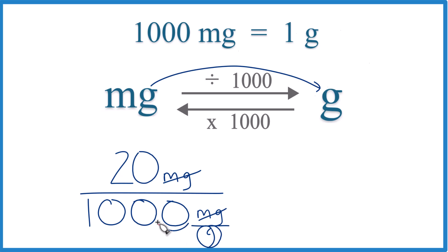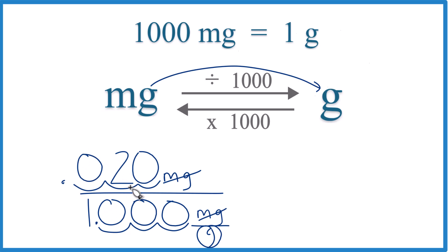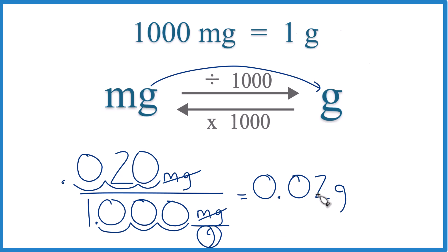So let's move our decimal place 1, 2, 3. That just gives us 1 down here, and up here we have to do the same — 1, 2, 3 — put a 0 here, and we end up with 20 milligrams equaling 0.02 grams. We don't need to include this last zero. So in answer to our question, 20 milligrams equals 0.02 grams.